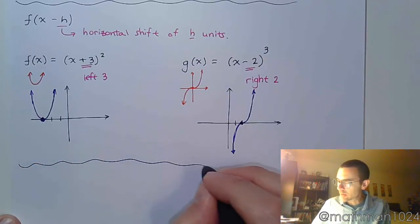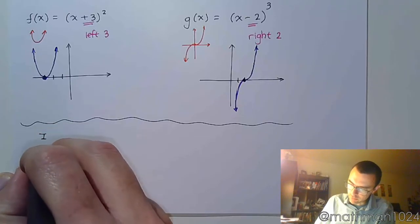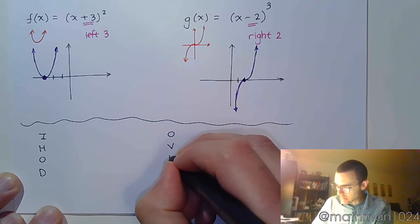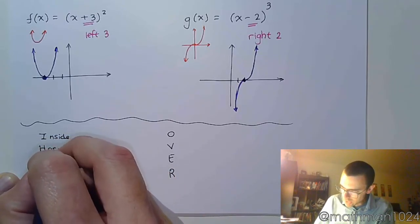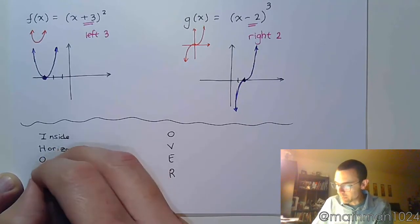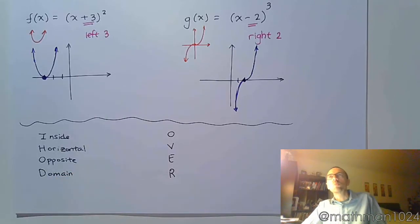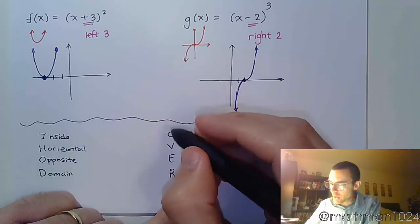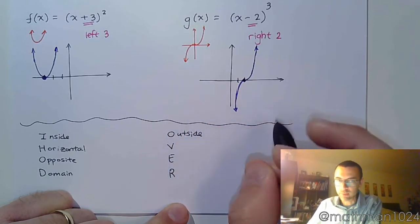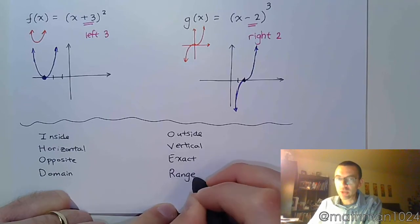All right, so to help us out, to help us remember how we're supposed to deal with each part, we have this little acronym, IHOD over. So IHOD means that when you have something inside your function, that is going to affect you in a horizontal way, but you're going to do the opposite of what you see, and D stands for domain. So if you shift things left and right, you have the potential to affect your domain from the original function. So inside, horizontal change, opposite of what you see. Oh, when you have something that is outside your function, you're going to do a vertical change, exactly what you see, and this has the potential to affect your range.